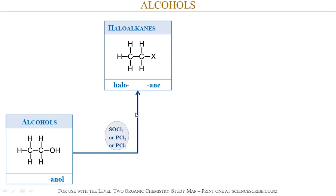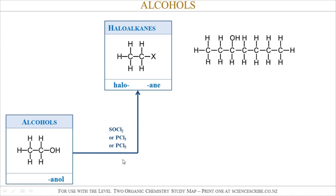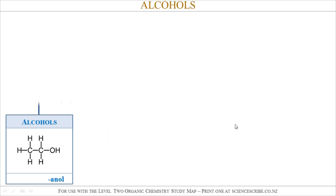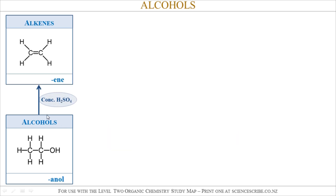Alcohols also undergo reactions with SOCl2 (thionyl chloride), PCl3 (phosphorus trichloride), and PCl5 (phosphorus pentachloride), and when they do, they form a haloalkane. These three reagents are called chlorinating agents — they just add Cl onto things. If I start with any alcohol and react it with SOCl2, I take the OH and swap it out with Cl, because these chlorinating agents substitute the OH group with a chlorine.